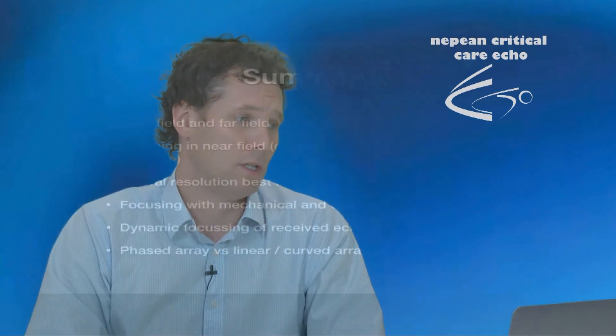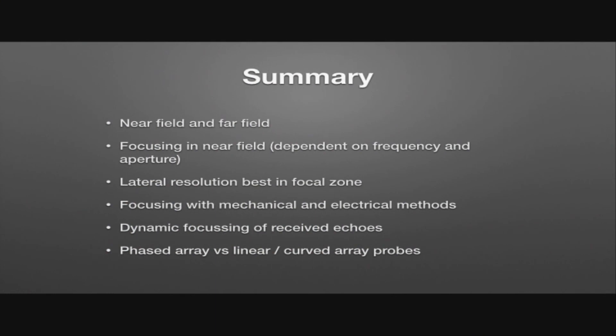So in summary, the ultrasound beam is going to have a near field and a far field. Focusing can only happen in the near field and that is dependent on frequency and aperture. In the focal zone, this is where the resolution and the intensity is going to be the best. Lateral resolution is best in the focal zone, as is axial resolution. Axial resolution is normally better than lateral resolution. Further focusing can occur with mechanical means, so that's using a curved probe or a lens, or with electrical means, where we get delays in different portions or different elements which can be stimulated at different times to other elements.